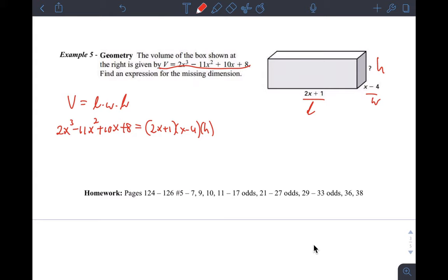And so to find the height, all we actually have to do is divide the product of these two factors out. And if you do that, you actually end up with a question to solve. And so this is just a long division problem.